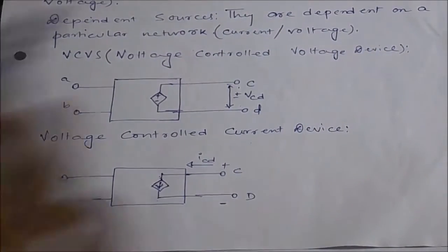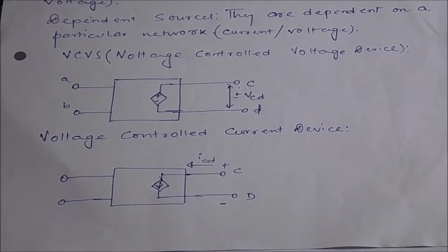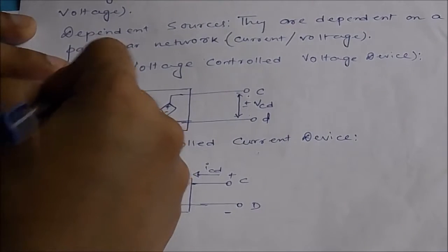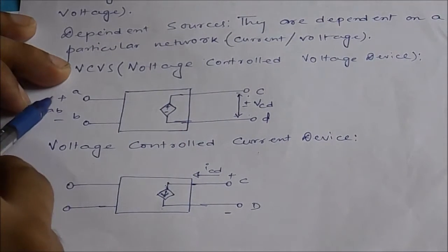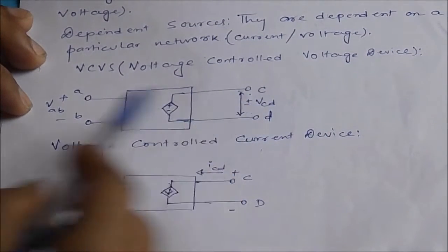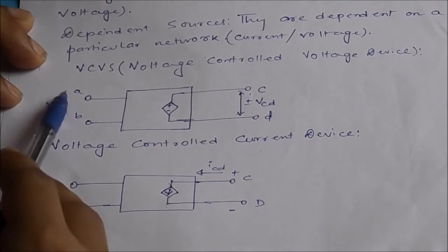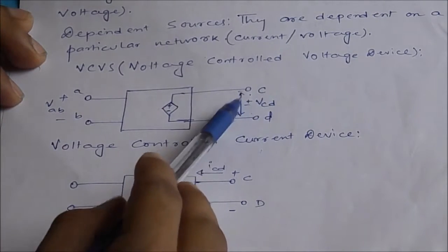There are some kinds of devices. In a BJT, it is a current controlled current device, because the formula is IC equals β times IB — meaning the output directly depends on the input current IB. There is another kind called a voltage controlled voltage device, where the input is VAB and the output is also voltage VCD, meaning VCD directly depends upon VAB. For a dependent voltage source, a diamond-like structure is used with plus and minus signs indicating polarity.